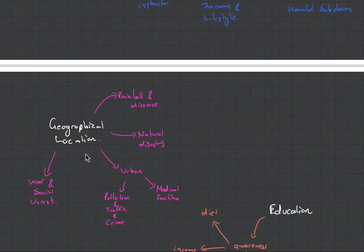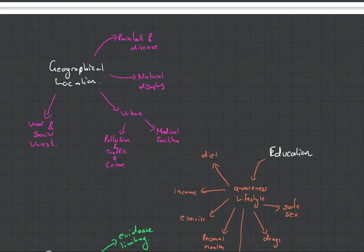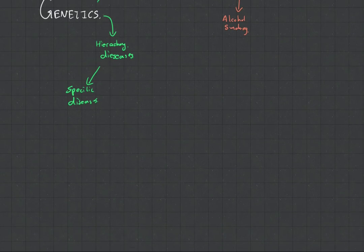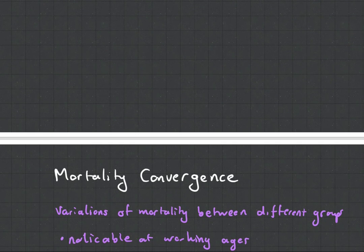Your location is also very important — rainfall, natural disasters, urbanization, war and social unrest. Genetics is an interesting one. There's not a lot of evidence that suggests genetics actually has an effect; however, there are certain diseases that do get passed on from parent to child.